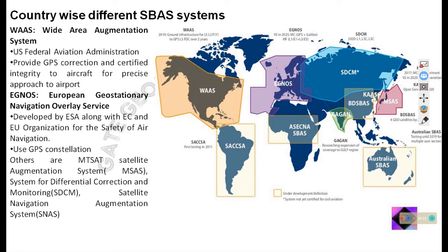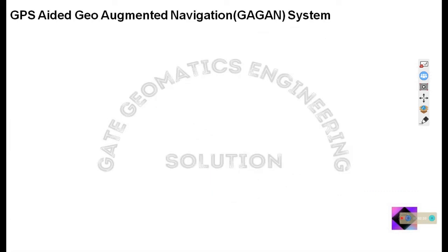India also has an S-BAS system named GAGAN. GAGAN stands for GPS Aided Geo Augmented Navigation system. It is a very proud moment that India has developed its own satellite based augmentation system. Though we use the GPS satellite constellation for our augmentation navigation system, we have developed our own augmentation system, which is a very good thing.